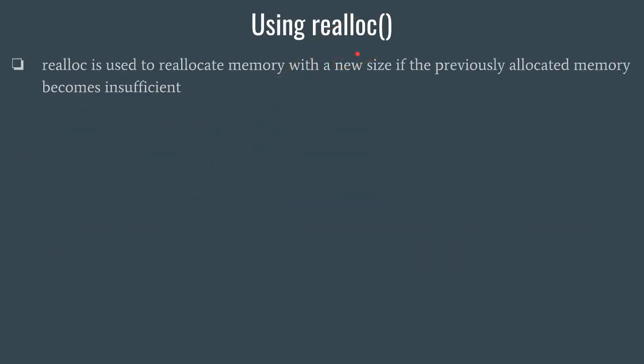We have one more function: realloc. In some cases the previously allocated dynamic memory may run short — your work was not accomplished with the previously allocated memory, so you need to increase the size of that block. That is done using realloc. Its syntax is: ptr = realloc(ptr, new_size), where ptr is the pointer to which memory was dynamically allocated earlier, and new_size is the new size you want to allocate.